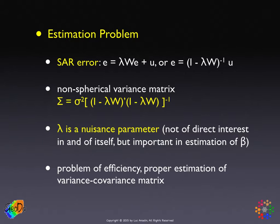Recalling our discussion of spatial model specification, even though the spatial weights matrix W may be very sparse — suggesting only correlation between immediate neighbors — once we compute the inverse of this cross product, the resulting matrix is no longer sparse. So we have correlation between neighbors well beyond those included in the spatial weights matrix.